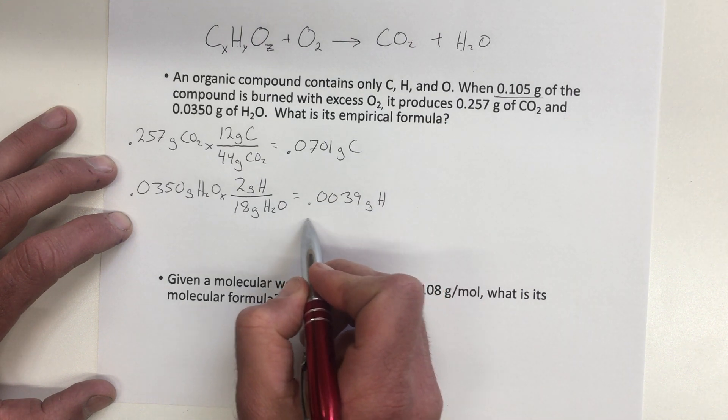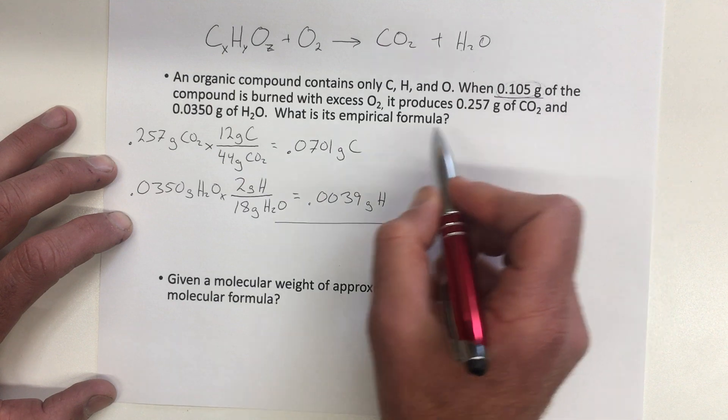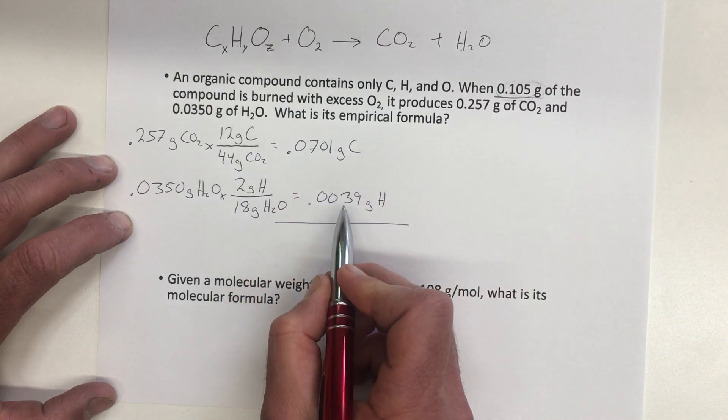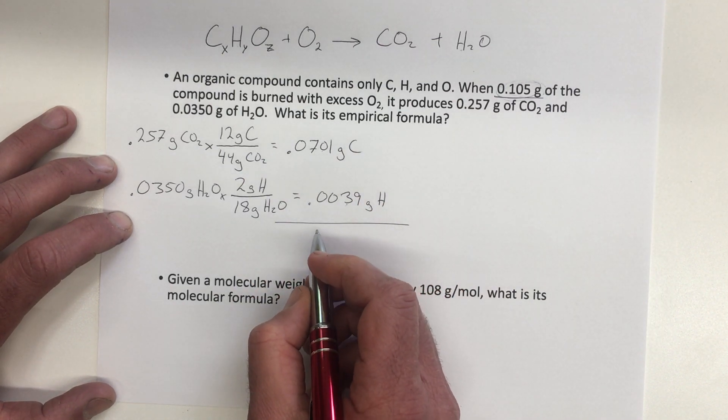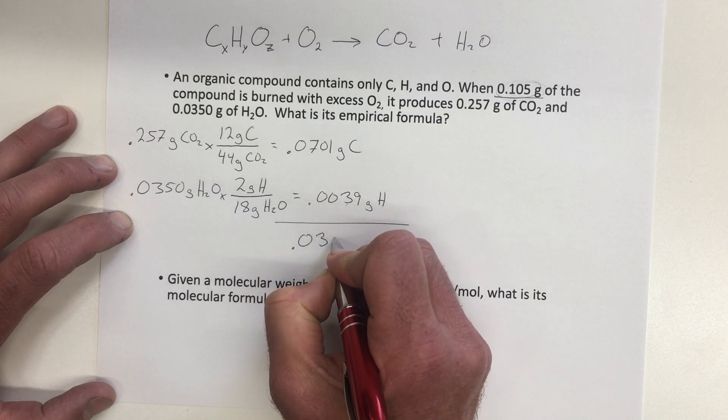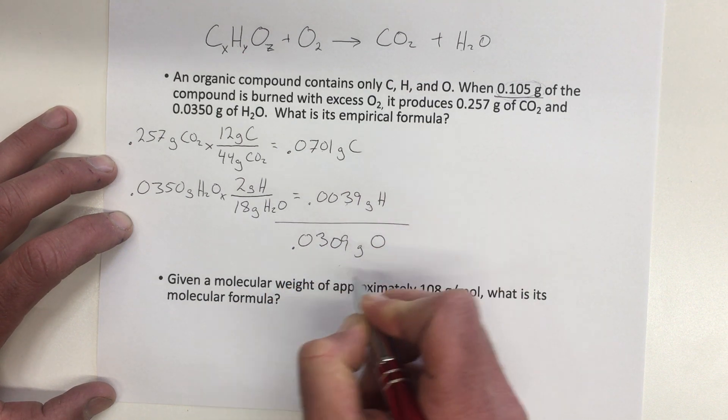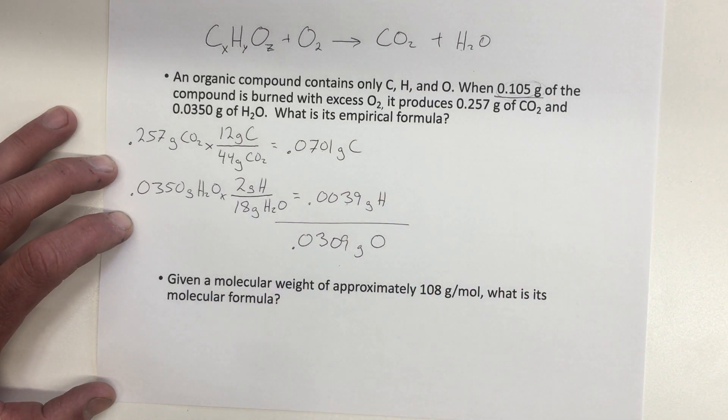And so what we're going to do is we're going to subtract. So we're going to take the total mass of the compound, subtract the carbon, subtract the hydrogen, and that will tell us that there were 0.0309 grams of oxygen in that original compound.